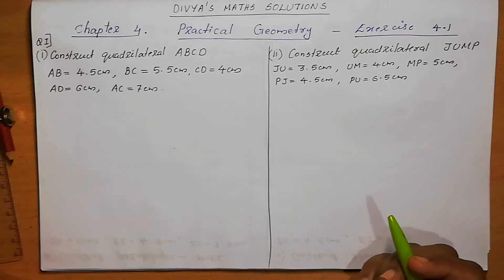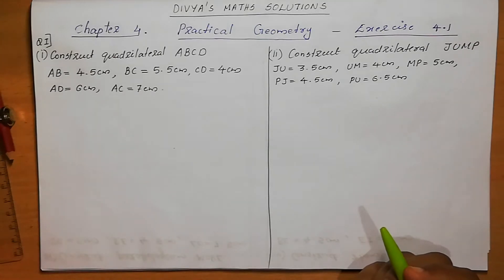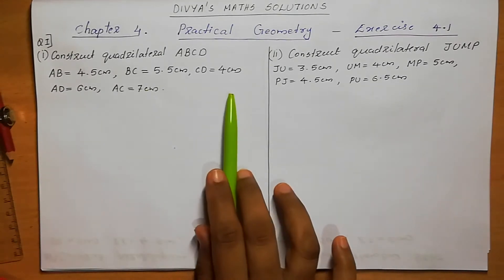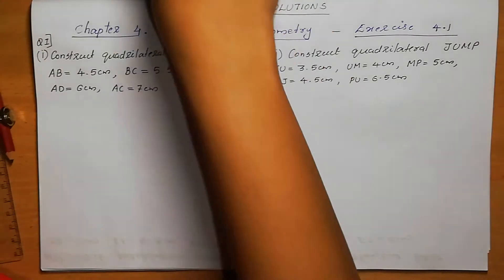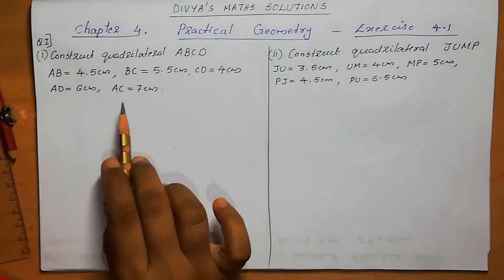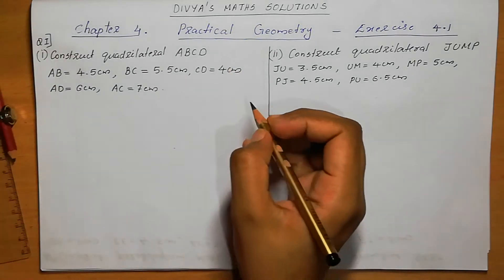Dear students, welcome to Divya's MagSolutions. Today we are going to discuss Chapter 4 Practical Geometry, Exercise 4.1. Question number 1: Construct quadrilateral ABCD, AB = 4.5, BC = 5.5, CD = 4, AD = 6 and AC = 7 cm. We need to construct a quadrilateral — that means a four-sided figure. First we can draw a rough figure.